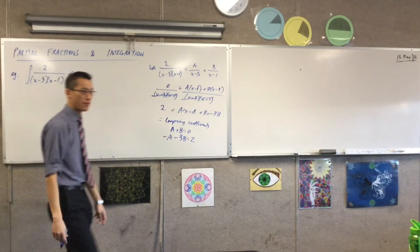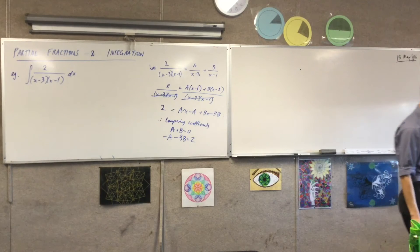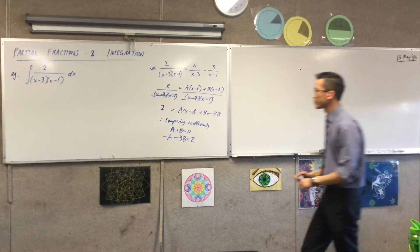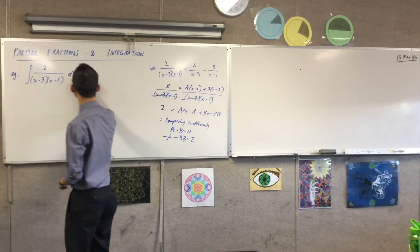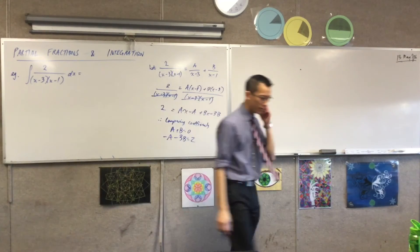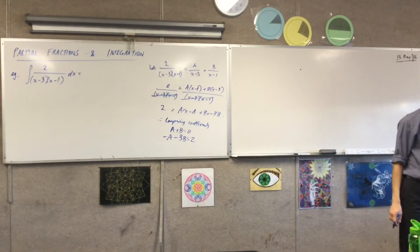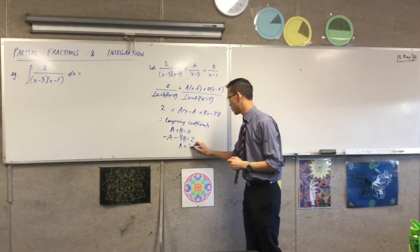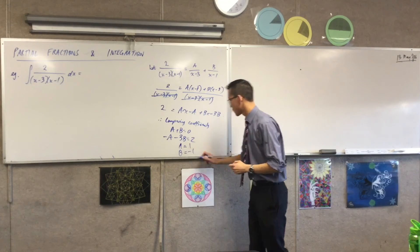So I've got these two guys, the x terms, which correspond to the 0x over here. So I'll say a plus b equals 0, and negative a minus 3b equals 2. So I'm going to go ahead and solve. Can you just go ahead and solve that for me?